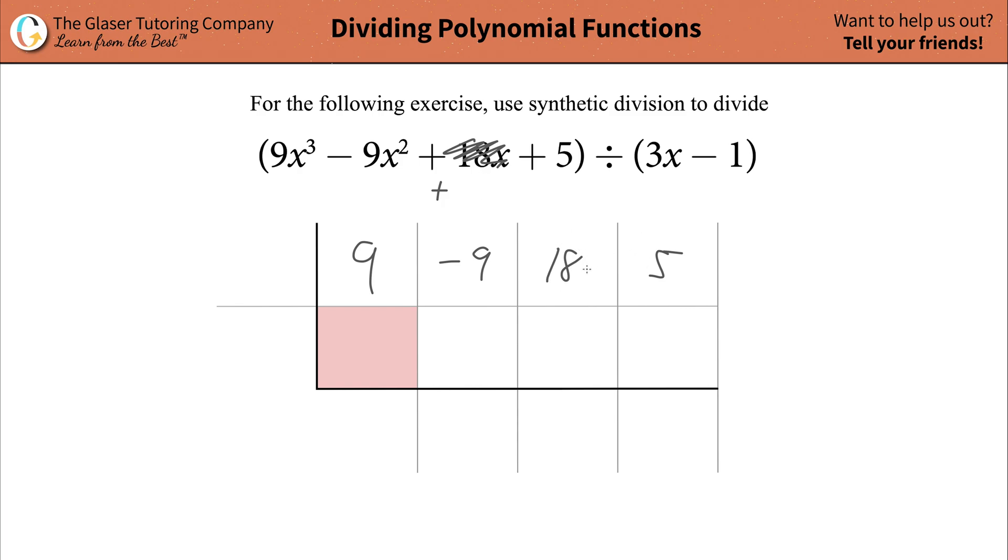The reason being is because you need this format in order to make this synthetic division work. So what you would do is you would plug in 0 here for 18. So basically, if you have a cubic, you should have four terms. If you had a, if that wasn't there, and you had just a regular quadratic, then you'd have only three terms. Hopefully that makes sense.